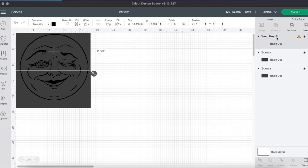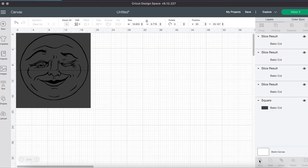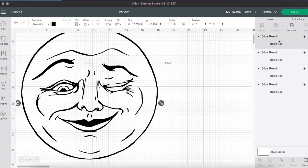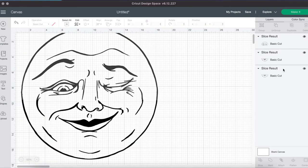Now selecting our design as well as one of the rectangles, we're going to go ahead and go down to slice. And then you're going to just delete out any of the extra pieces that you don't need. So we're not going to need the rectangles. We're just going to leave the design behind and delete everything else out and go ahead and cut it.